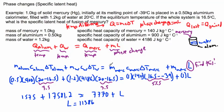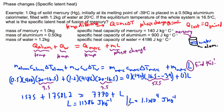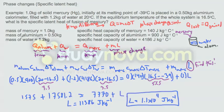The units of specific latent heat: since L = q/m, the units are joules per kilogram. We're limited to two significant figures, so the answer is approximately 1.1 × 10⁴ joules per kilogram. That's our specific latent heat of fusion for mercury.